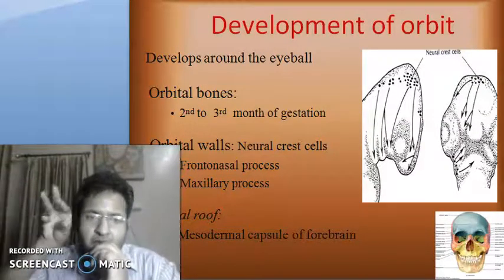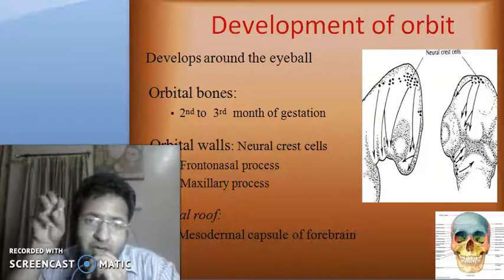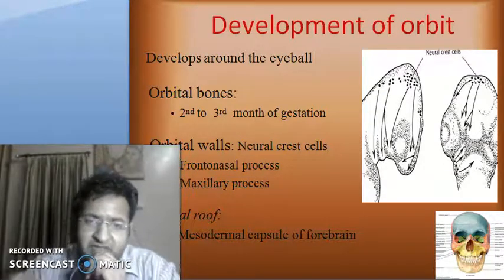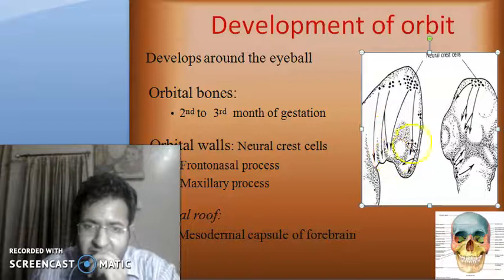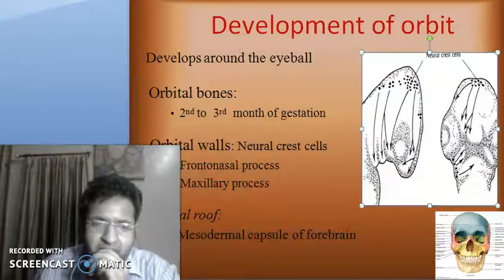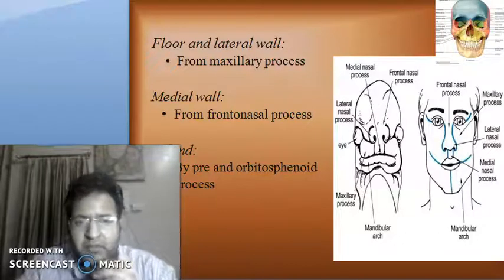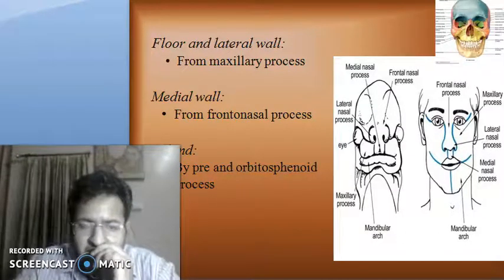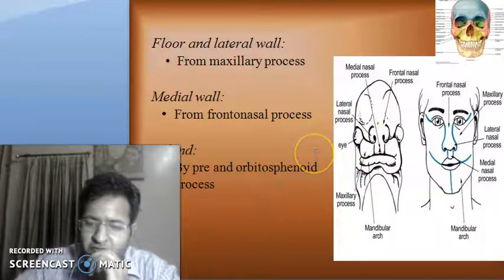The orbit is a quadrilateral structure which develops around the eyeball. The orbital bones are formed at the second to third month of gestation. The orbital walls are formed from the neural crest cells, which form the fronto-nasal processes and the maxillary processes around the eyeball. The orbital roof is formed from the mesodermal capsule of the forebrain. The floor and the lateral wall are formed from the maxillary processes embryologically. The medial wall is formed in front from the fronto-nasal processes and behind by the pre- and the orbitosphenoid processes.